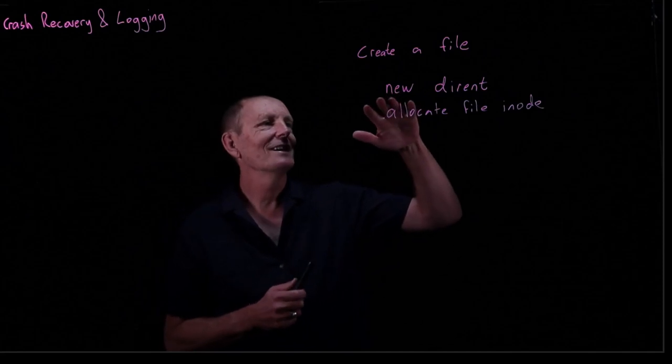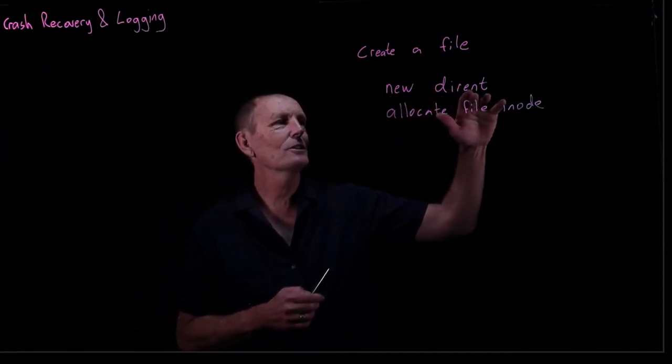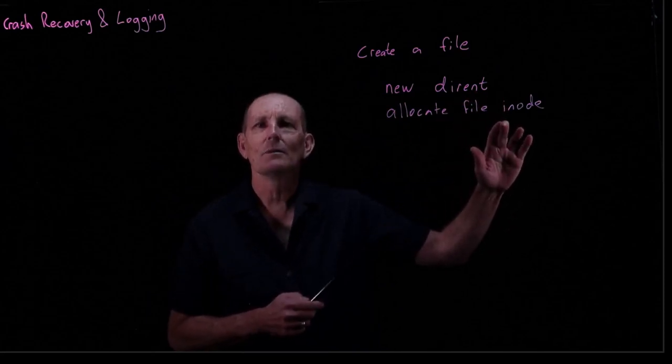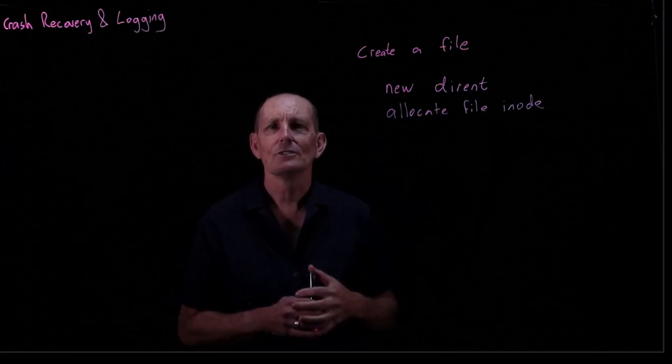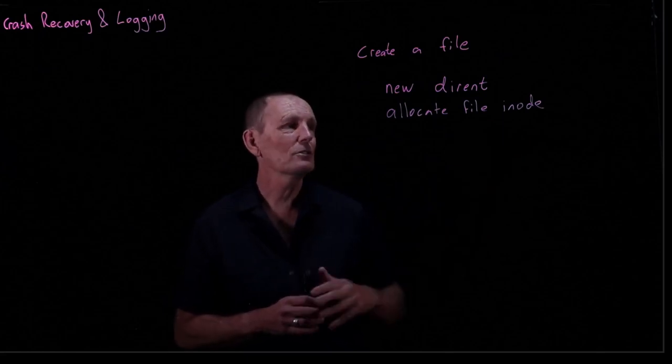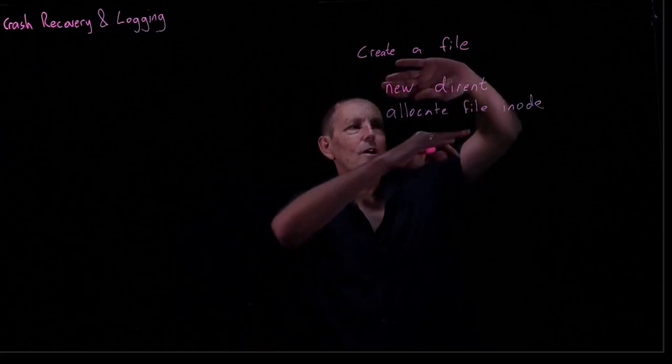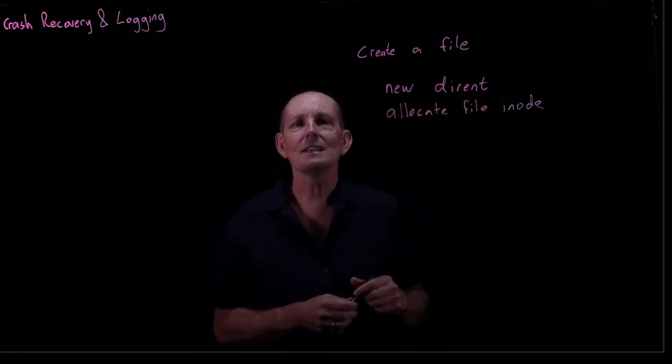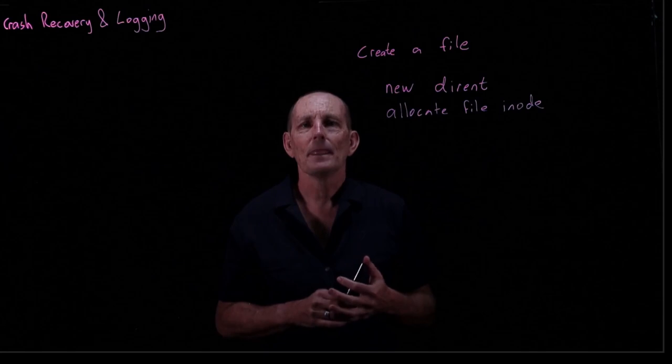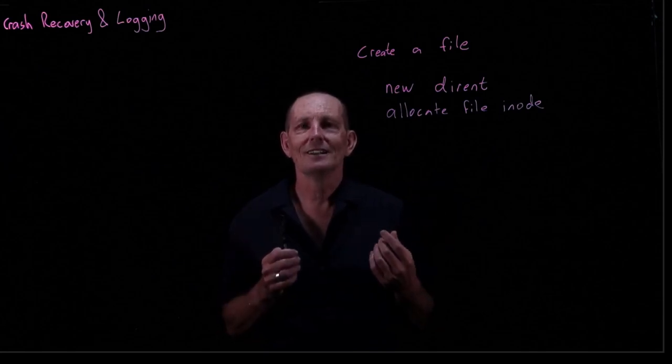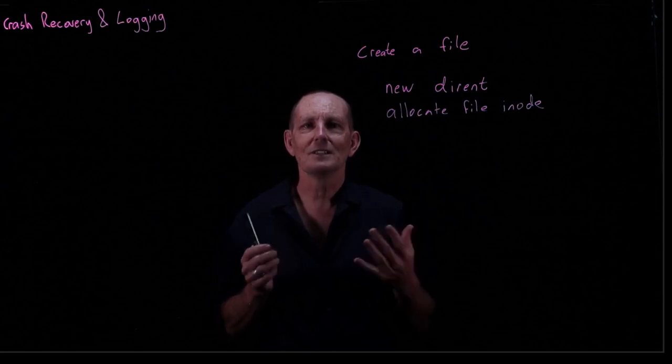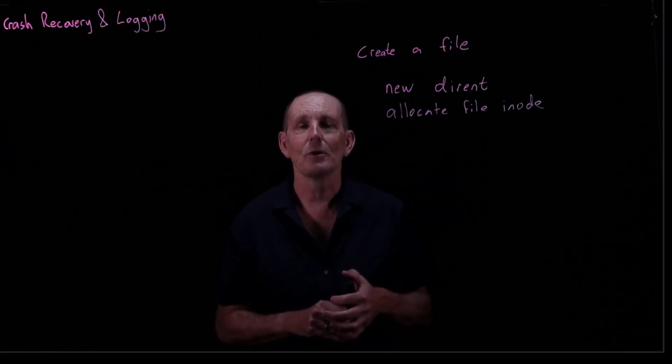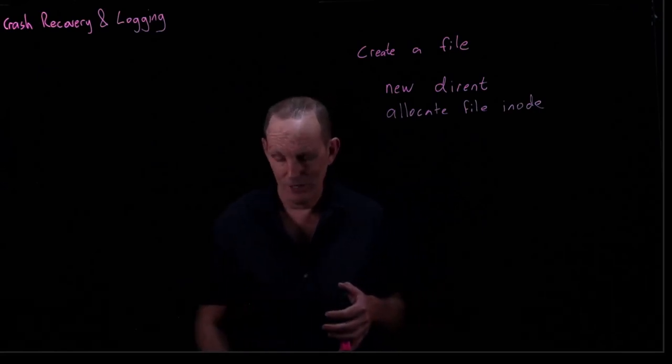If the ordering that these happen is that we write the new directory entry first before we've actually written the inode, then we've got a big problem because we've got a directory entry that's pointing to a free inode. If we're doing the other approach that actually the write first writes the inode and shows that it's in use, and then we crash before we actually write the directory entry, then it's not so bad. We have got a unused inode. So it's not free, but it's not used. So it's wasted. So that's certainly not as bad as having this directory entry point at a non-existent inode, or rather a free inode.